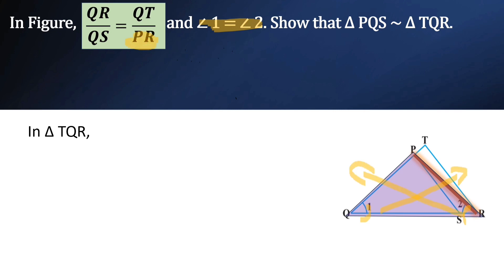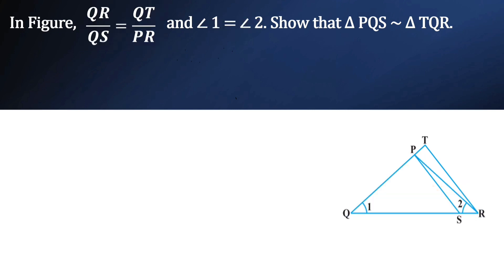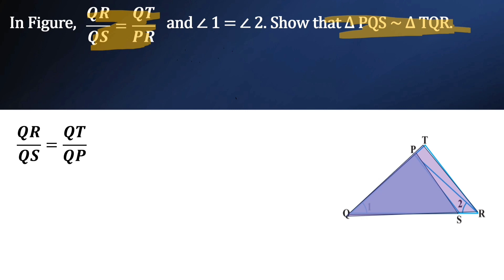Now let us substitute PQ instead of PR. Now we have changed QR by QS that is equal to QT by PR into QR by QS is equal to QT by QP. So in triangles PQS and TQR, angle 1 is common to both.